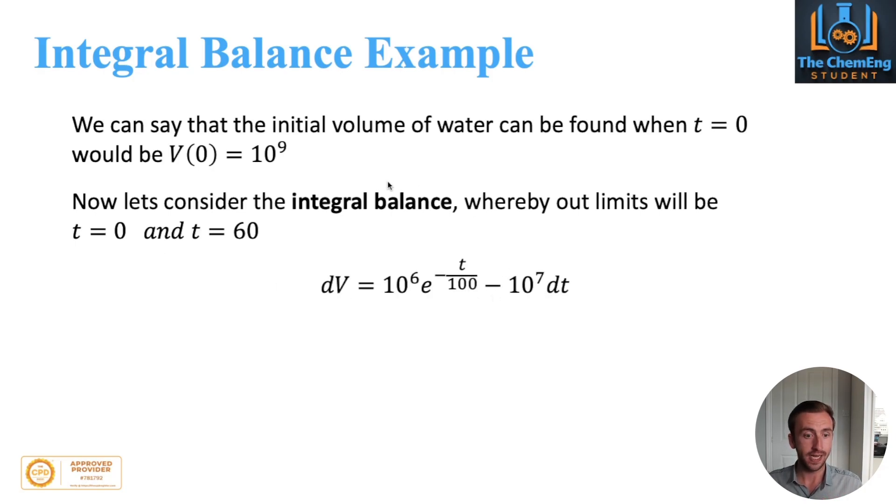So therefore we can take this and we bring the dt across to the other side, just like we did in the proof. And then we will give them their own independent integral signs. So we'll have v of zero and v of 60 dv, and then all of this integrated dt between zero and 60.